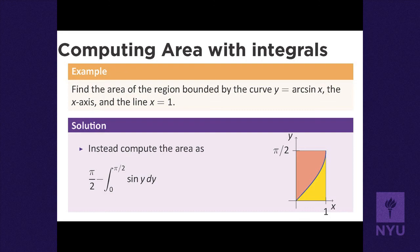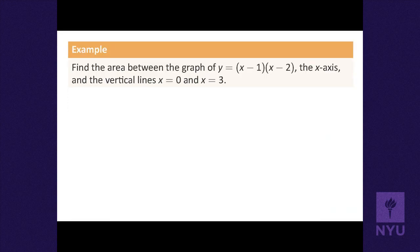Here's one for you to try: find the area between the graph of y = (x-1)(x-2), the x-axis, and the vertical lines x = 0 and x = 3. 'Between two curves' means above one curve and below the other. To set up the problem, you really need to graph it first.